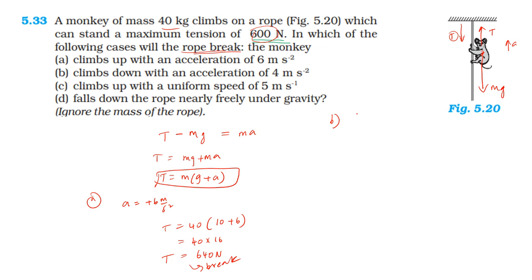In the second case, climbing down with acceleration, the tension is lower. The higher the upward acceleration, the higher the tension; the lower the downward acceleration, the lower the tension compared to the first case.